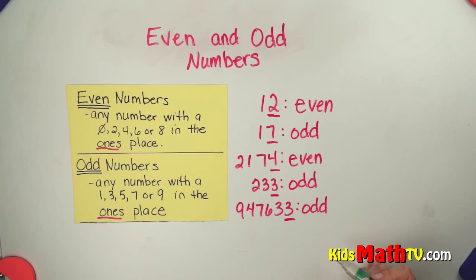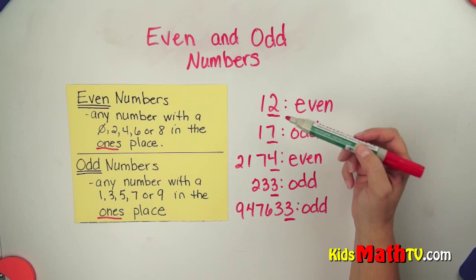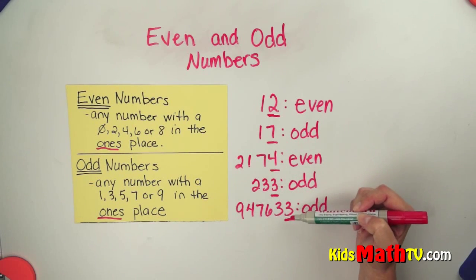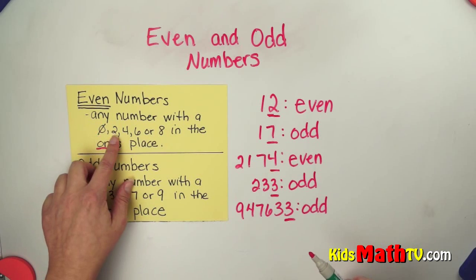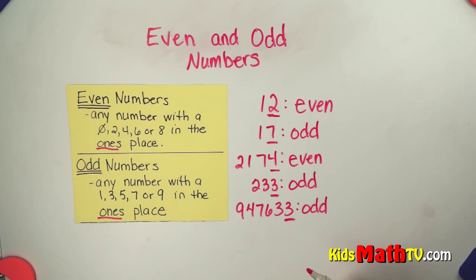So to determine if a number is odd or even, you simply look in the ones place. And if it is a 0, 2, 4, 6, or 8, it's an even number. If it's a 1, 3, 5, 7, or 9, it is an odd number. And that's the end of our lesson on even and odd numbers.